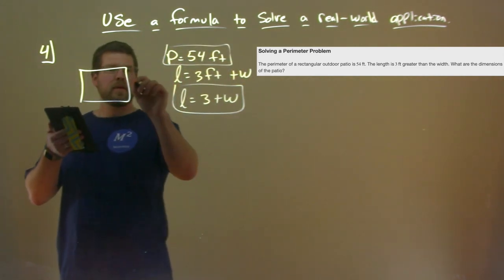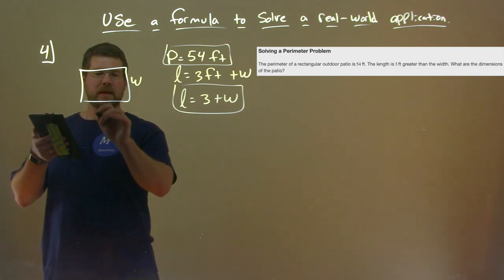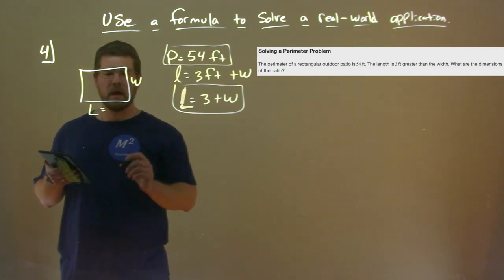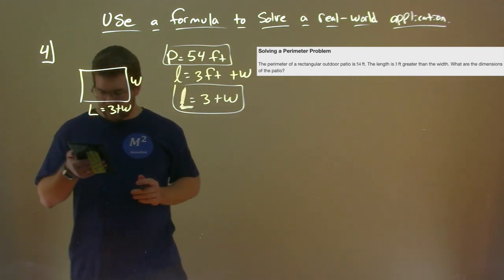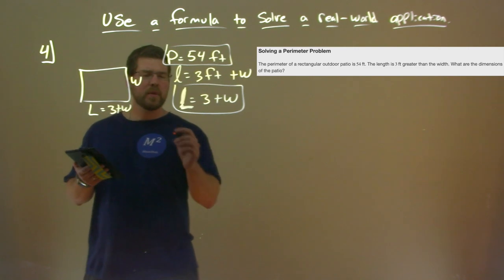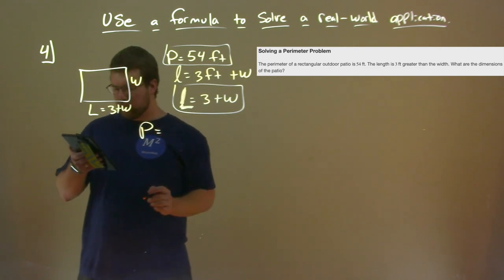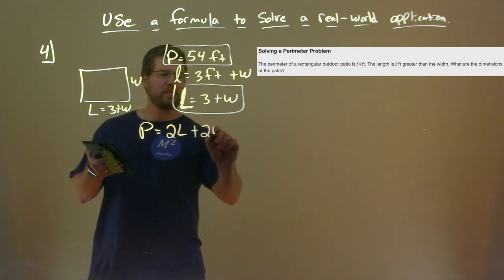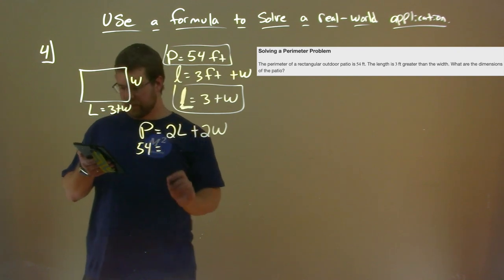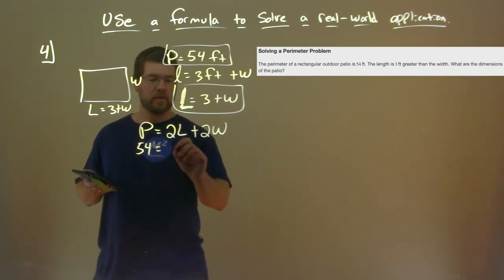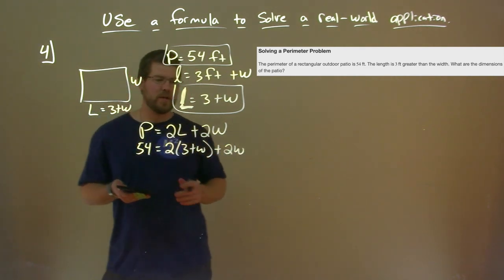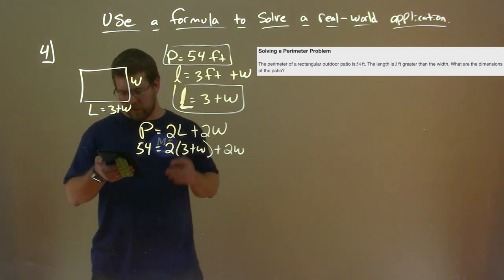We have our patio with width W and length L, where L equals 3 plus W. We know the perimeter formula: perimeter equals 2L plus 2W. Let's plug in what we know: 54 equals 2 times (3 plus W) plus 2W. Now we have an equation with one variable and we can solve for it.